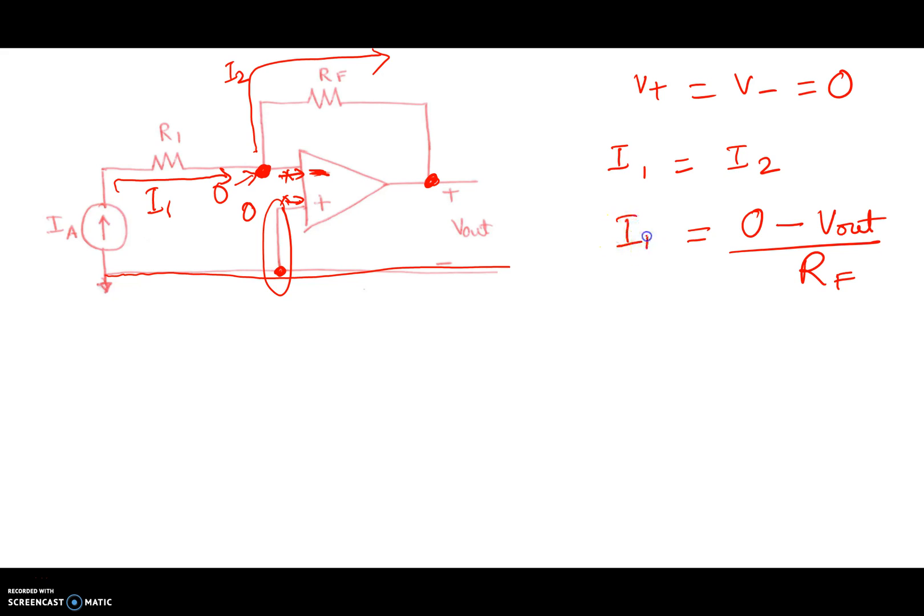We can leave I1 as is. So what this does is when you simplify it, we end up with V out equals minus I1 times RF.